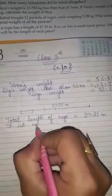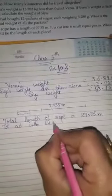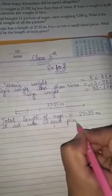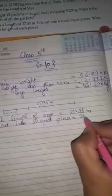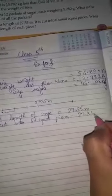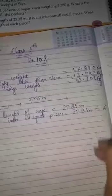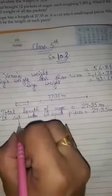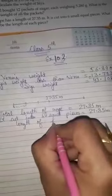Then divide 27.35 meters by six. Now, length of each piece: length of each piece is equal to...